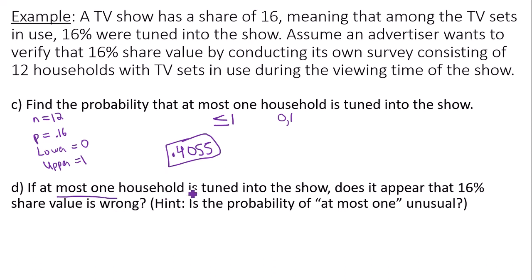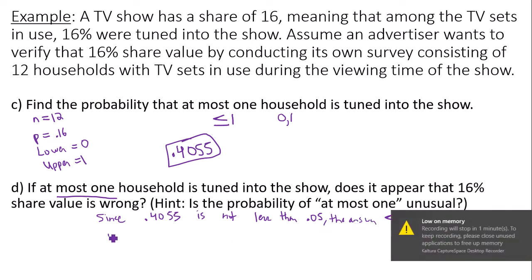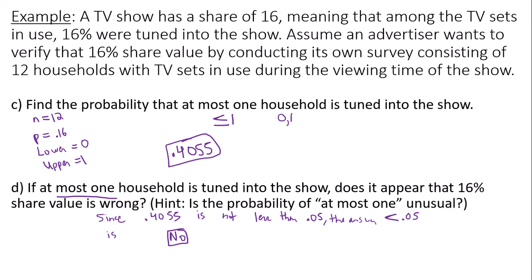Part D: if at most one household is tuned into the show, does it appear that the 16% share value is wrong? Another way to ask this is whether the probability of at most one is unusual. Unusual means less than 0.05. Since 0.4055 is not less than 0.05, the answer is no — the 16% share value does not appear to be wrong. And that's how you work out that question.